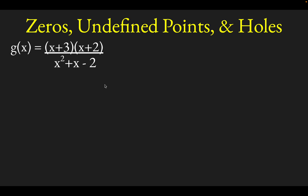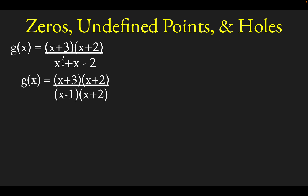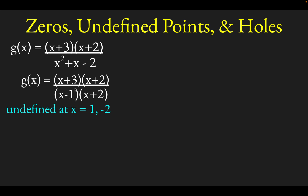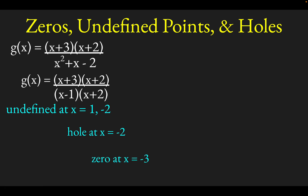Let's look at one final example. Now we have x plus 3 times x plus 2 in the numerator and x squared plus x minus 2 in the denominator. To find where the function is undefined, we factor the denominator — it factors into x minus 1 times x plus 2. So the function is undefined at x equals 1 and at x equals negative 2. Since x plus 2 also appears in the numerator, there's going to be a hole at x equals negative 2, and there should be a zero at x equals negative 3 from the remaining numerator factor.